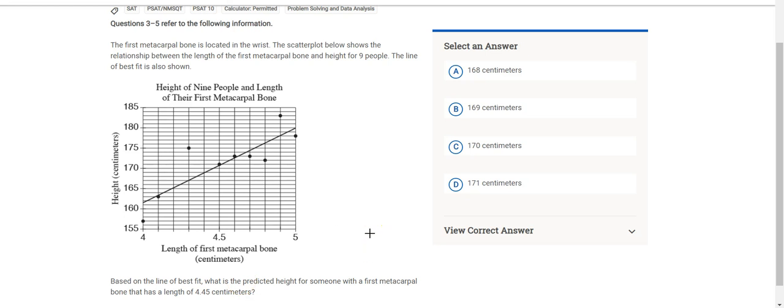Okay, here we are back with Teach Them Live again with our practice question of the day, which is a carry-over from the last couple videos. The first metacarpal bone is located in the wrist, same scenario that we were talking about before. The scatterplot below shows the relationship for nine people. Based on the line of best fit, what is the predicted height for someone with a first metacarpal bone that has a length of 4.45 centimeters?